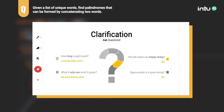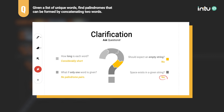Before we dive into coding, do not ever forget to ask clarifying questions. Here are some examples: How long is each word? Let's say less than 10 letters. Should we expect an empty string? No. What if only one word is given? Then we simply have no palindrome pairs. Should we expect any spaces in a given word? No.